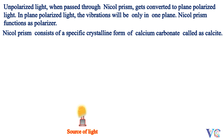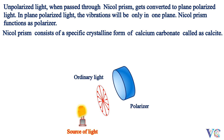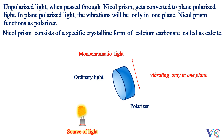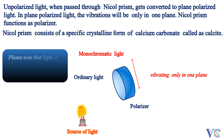Source of light produces ordinary light. Ordinary light, on passing through the polarizer, converts to monochromatic light — monochromatic light vibrating only in one plane. Please note that light of only one wavelength is called monochromatic light.